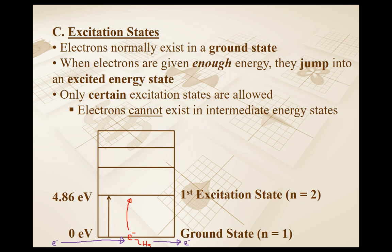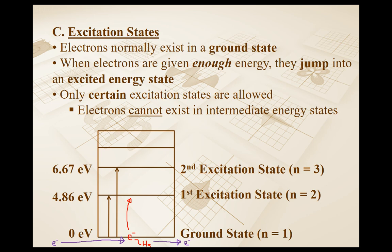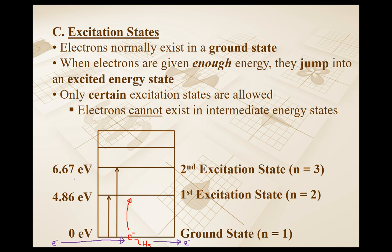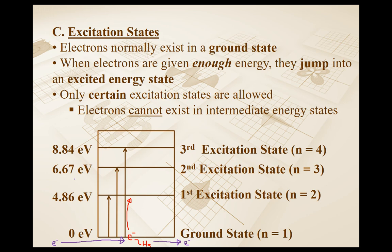The ground state we're going to refer to as N equals 1, and our first excitation state is N equals 2. The second excitation state, N equals 3, requires 6.67 electron volts to get there — that's why we only observed those other numbers once we fired in 7 electron volts. The third excitation state is N equals 4, and the energy required to get there is 8.84 electron volts.